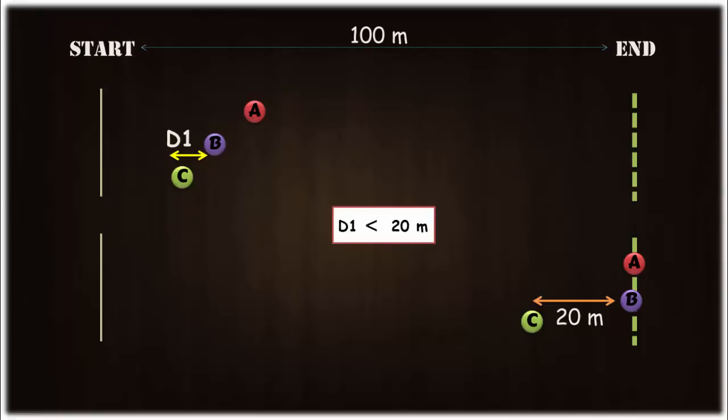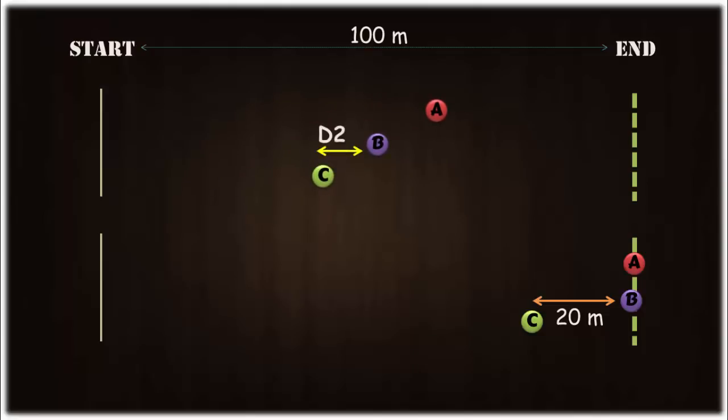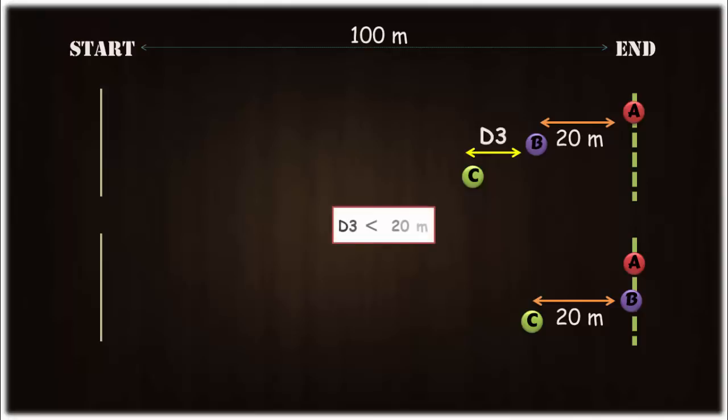They move ahead so that the distance between them increases further. At this point as well the distance between B and C is less than 20 meters. Continue further. Although at this point the distance between B and C has increased, it's still less than 20 meters. So the distance between A and C at this point is definitely less than 40 meters and we have to find it out.